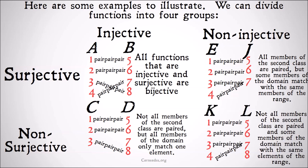Functions that are both non-surjective and non-injective have members of the second class that are unused — so the range is not identical to the second class — and they have members of the range which map onto more than one member of the domain. Those are functions which are neither surjective nor injective.